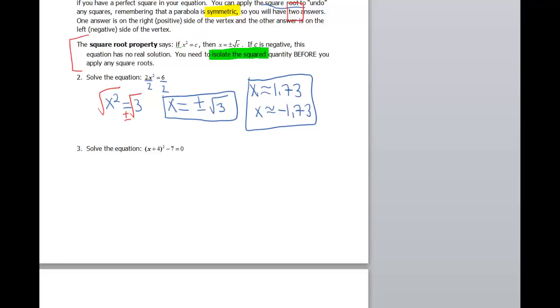Next one. I want to again isolate my squared quantity. So let me highlight that. So I need to undo that minus 7 that's sitting there and I'm gonna undo that with a plus 7.